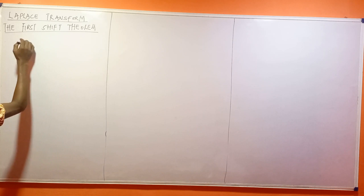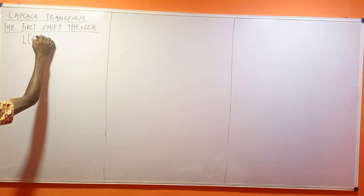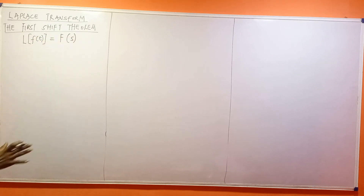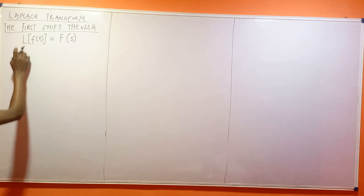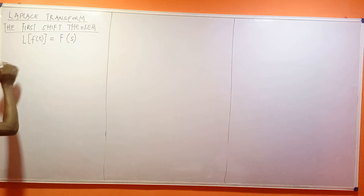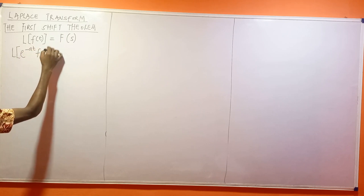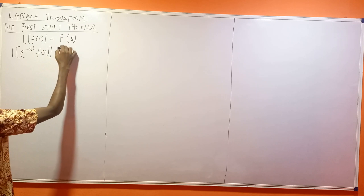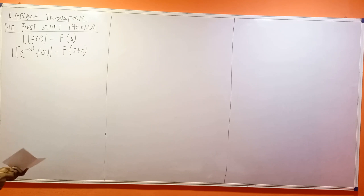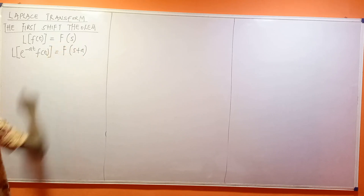Remember that last time we agreed that the Laplace transform of f(t) is always F(s). So when you take the Laplace transform of a function in t, your result is a function in s. So what if we then have the Laplace transform of exponential minus at times f(t)? What do we get as our result? This will become F(s + a). This tells you that you're going to replace your s with s plus a. That's the meaning.